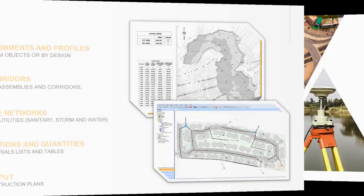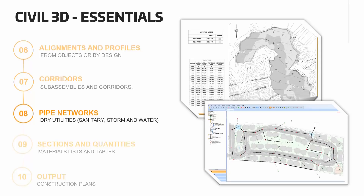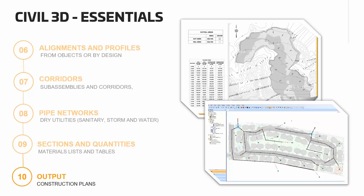Then we will kick off the roadway design portion of the course by learning how to create alignments and profiles, then an assembly or cross-section. An alignment and a profile are brought together to create corridors. Next, we will learn how to design wet utilities such as sanitary and stormwater sewers. When the detailed design is completed, we need to estimate the project quantities by using material lists. Finally, we will see how to create construction plans and documentation using Civil 3D.